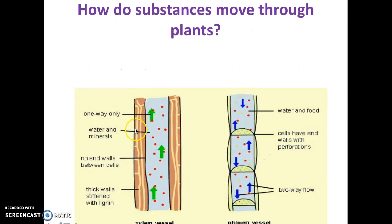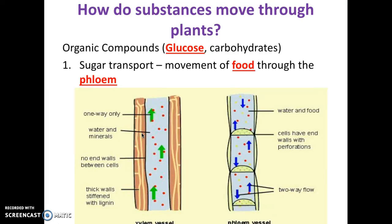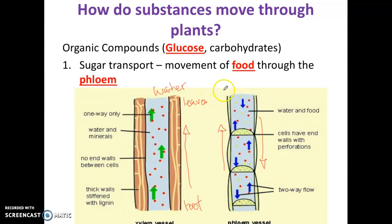A little bit about the difference between xylem and phloem vessels or tissues: the xylem is responsible for transporting only water. Remember — xylem only transports water from the roots to the leaves, and it only goes in one direction. The phloem, on the other hand, actually transports materials both up and down. It can go from the root to the leaves or from the leaves down to the roots. Most of the time, what it's transporting is the food that plants make — the glucose. The phloem is responsible for transporting foods and carbohydrates like glucose that the plant is making.